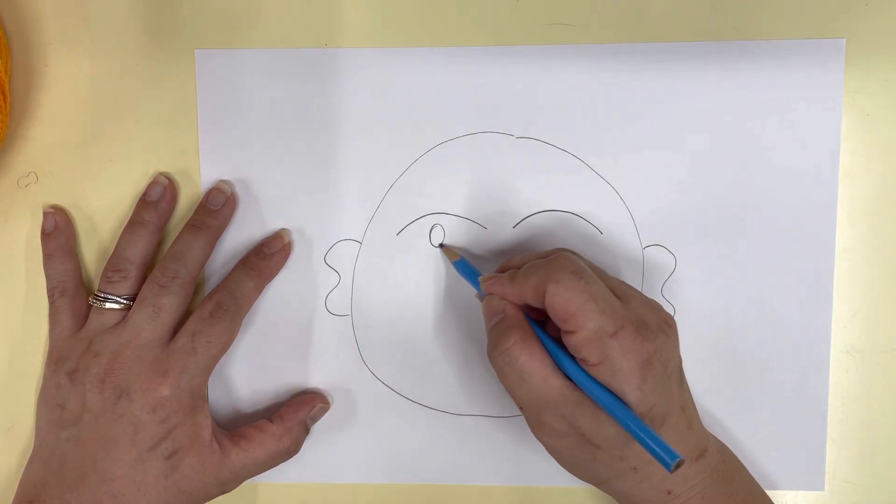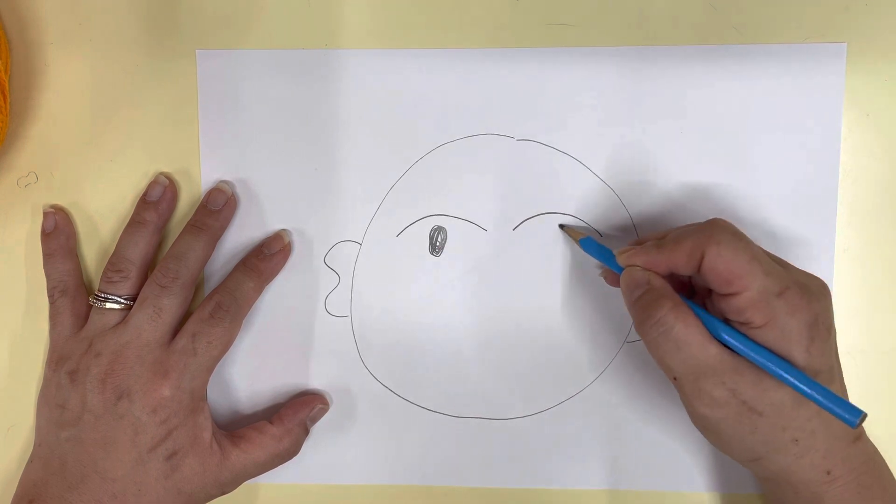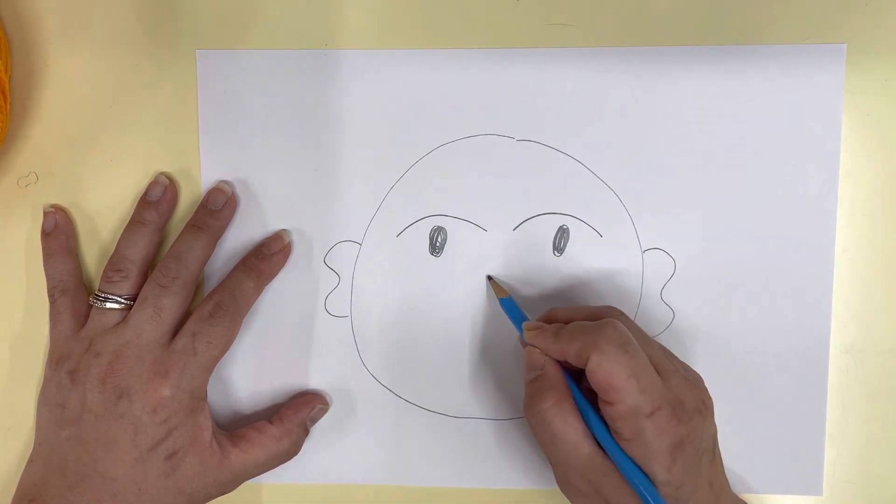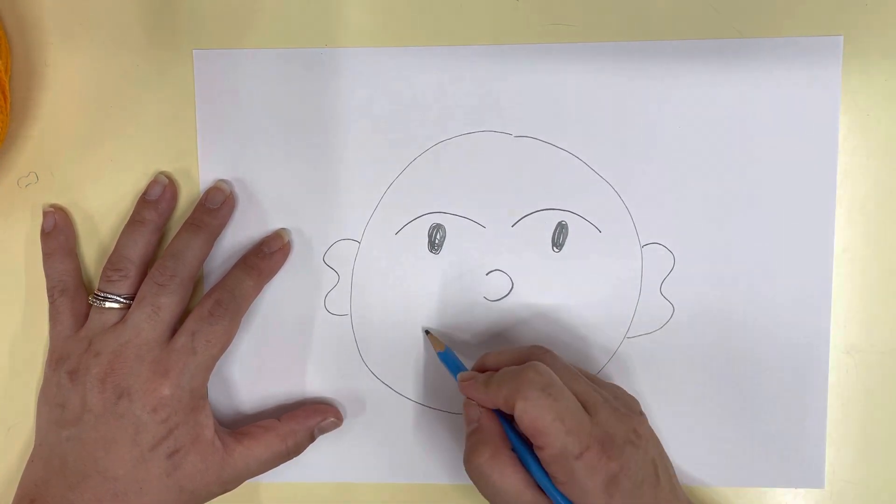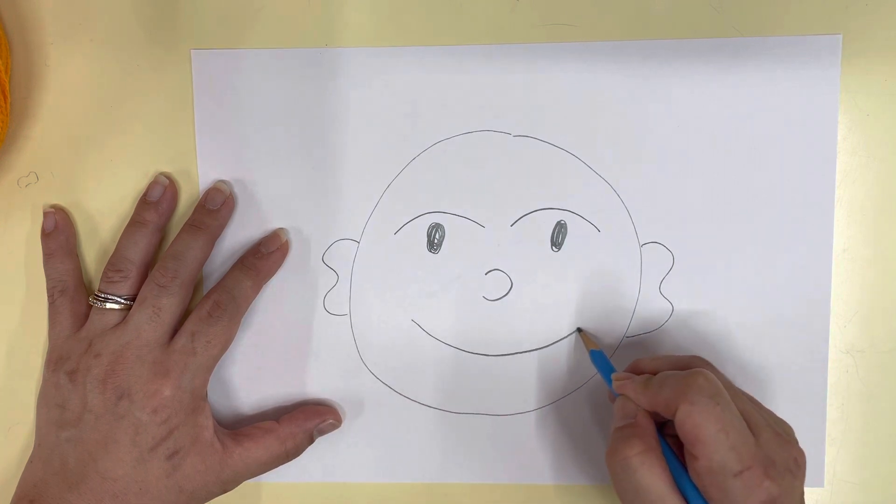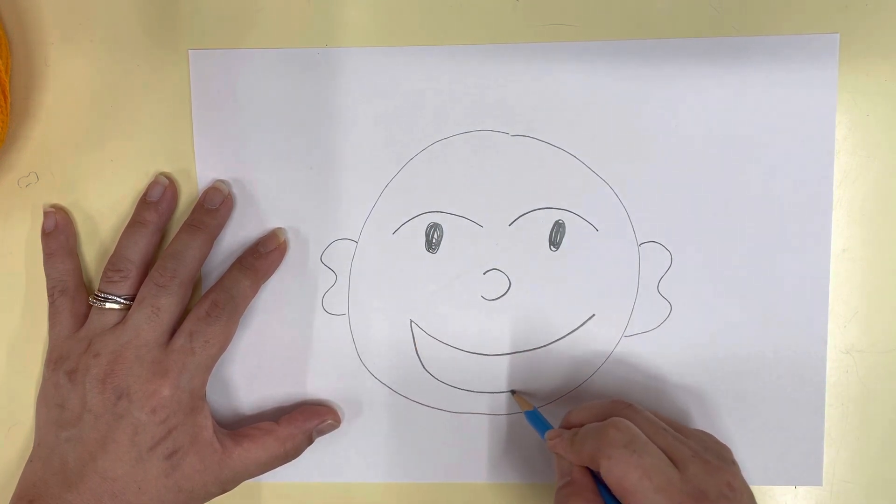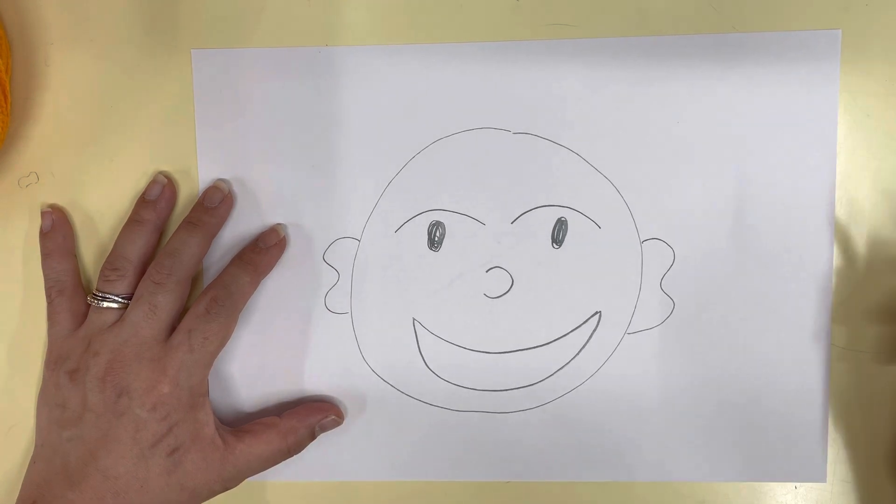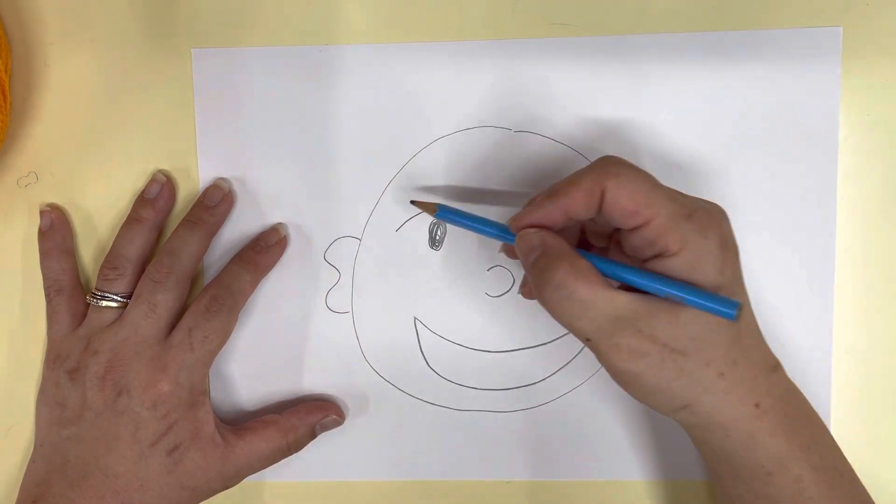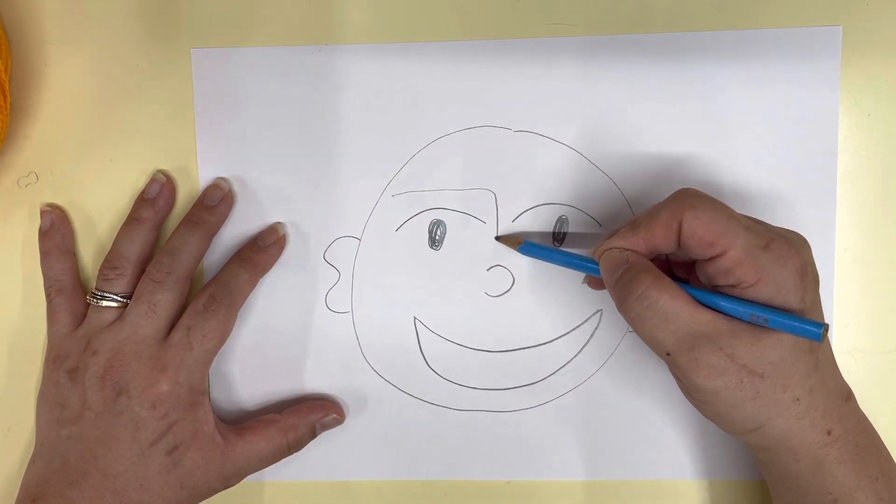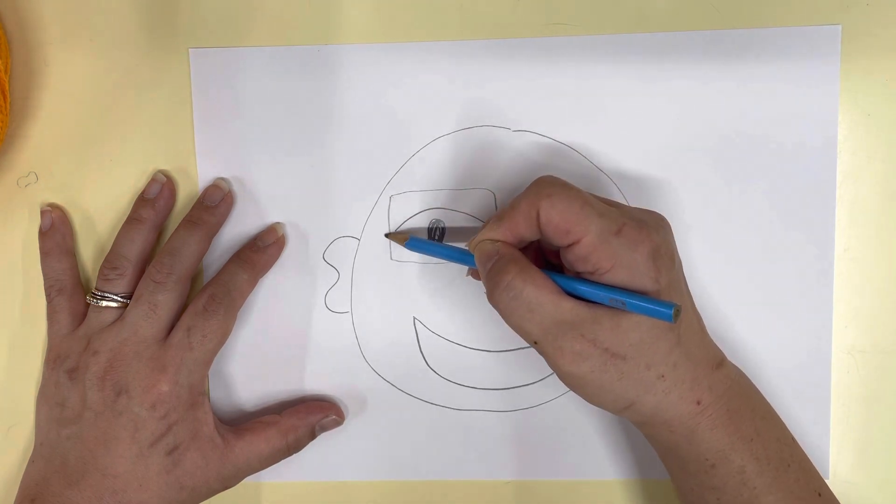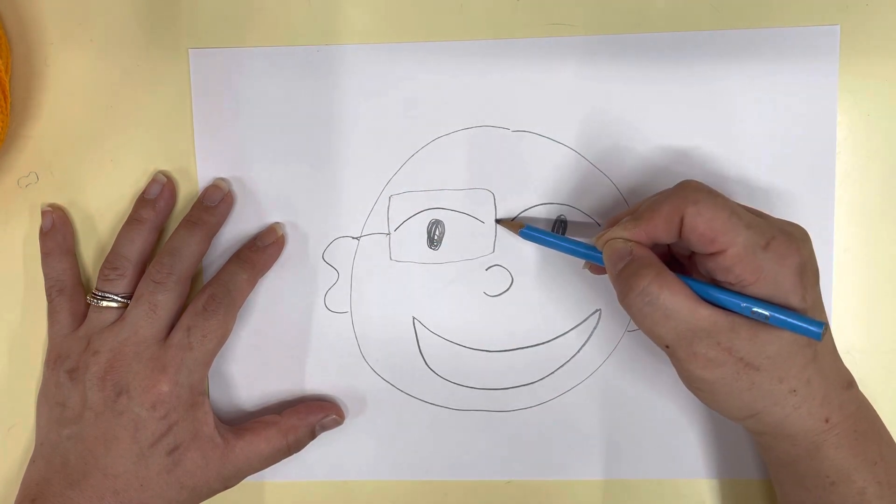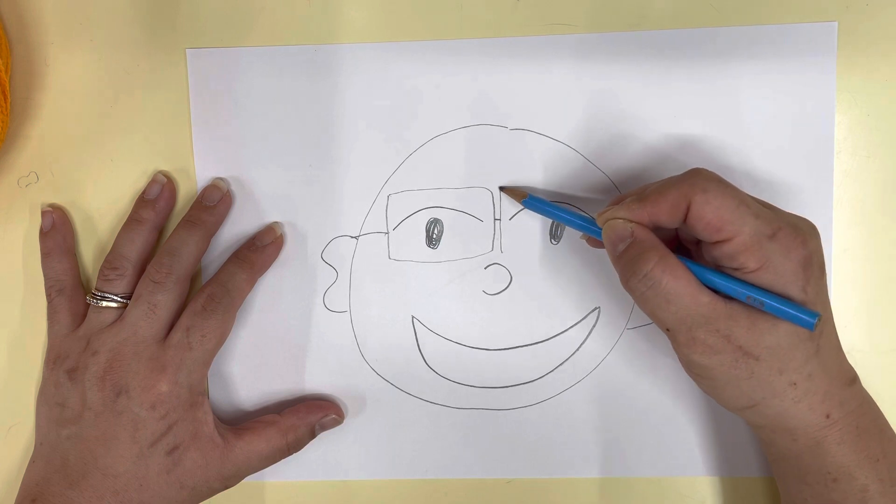And then I'm going to draw, oh what are these? These are my eyes. And then you can draw your nose and a big happy smile. And Hitomi wears glasses, so I'm gonna put some glasses here. These are Hitomi's glasses. But you don't have to wear glasses if you don't.